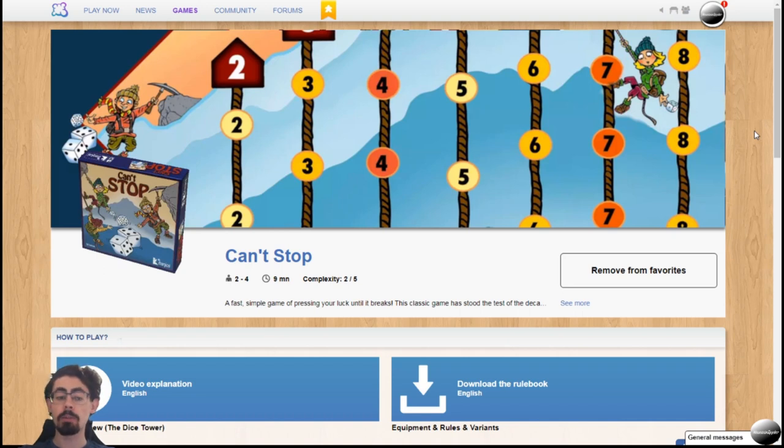How's it going everyone? Monospider here bringing you another episode in Board Game Arena. Today I'm going to be looking at a new game called Can't Stop. This game is for 2 to 4 players, takes about 9 or 10 minutes to finish and it's relatively simple. Board Game Arena gives it a 2 out of 5.